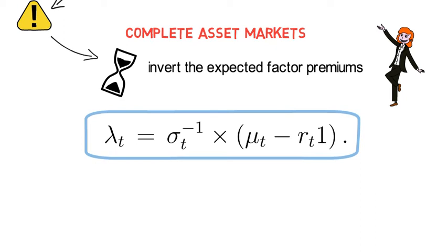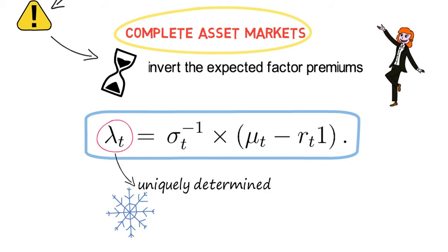Now if we look at that from a slightly different angle, that says that under complete asset markets, lambda t is uniquely determined conditional on knowing mu t and r t, and that makes the SDF unique.